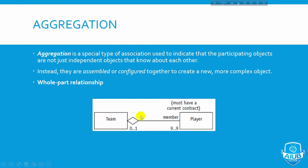Aggregation is defined as a whole-part relationship. For example, consider a player and a team. If you are a player, a team would be the same. A team is made up of players.